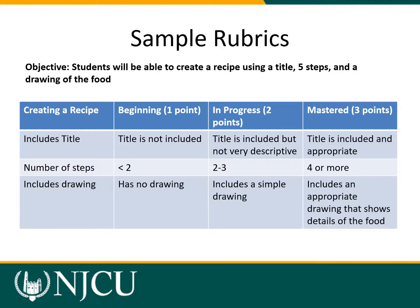Here's one more rubric: students will be able to create a recipe using a title, five steps, and a drawing of the food. The rubric has three levels — beginning, in progress, and mastered. The first row is whether the students included a title and whether it's descriptive. The second row is the number of steps. The third row is whether they included an appropriate drawing matching the food. You would then score it: an appropriate title earns three points, two to three steps earns two points, and a simple drawing earns two more points — totaling seven points.